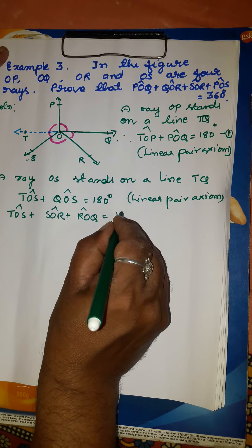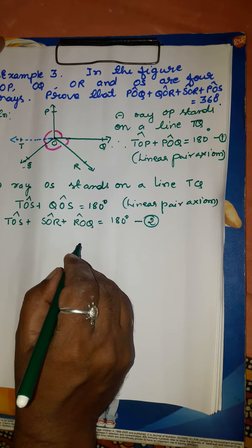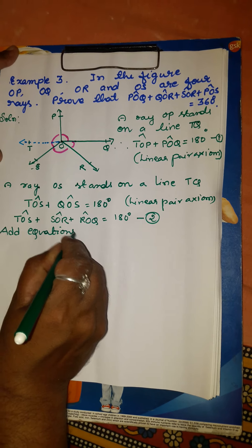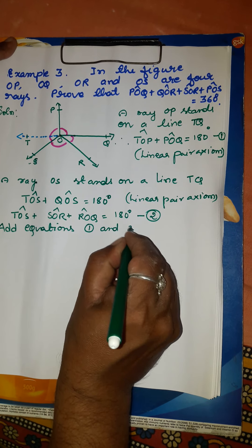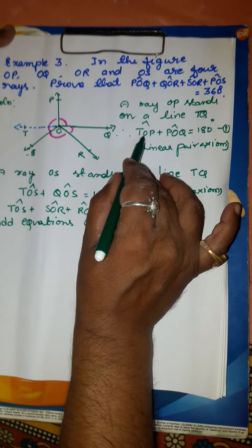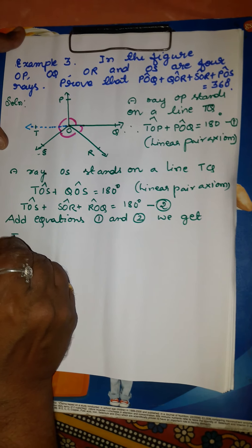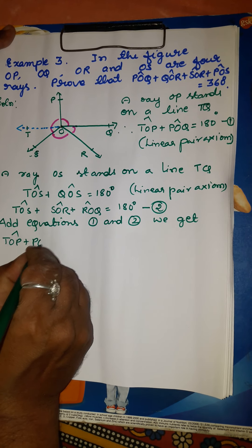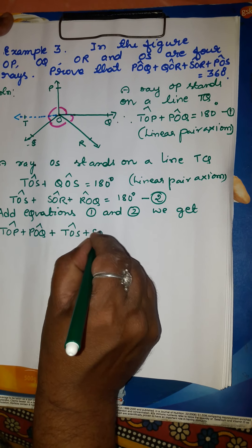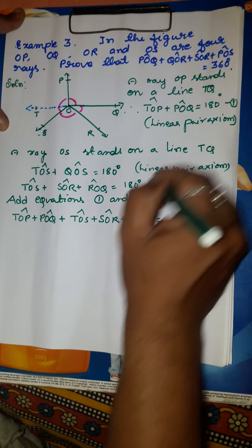Now add equations 1 and 2. Adding the left-hand sides: TOP plus POQ plus TOS plus SOR plus ROQ equals 180 degrees plus 180 degrees.